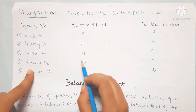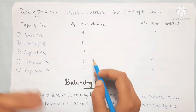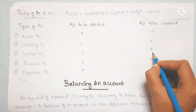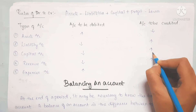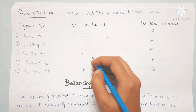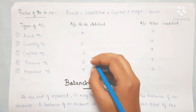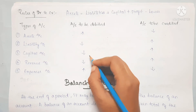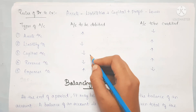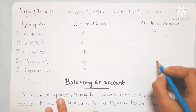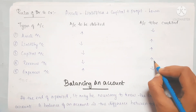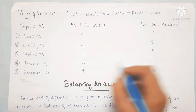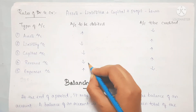For Capital: if the loan amount or capital is increased, we credit. If we receive the amount of capital, we credit. This is the same concept as liabilities - if there is an increase, we credit; if there is a decrease, we debit.